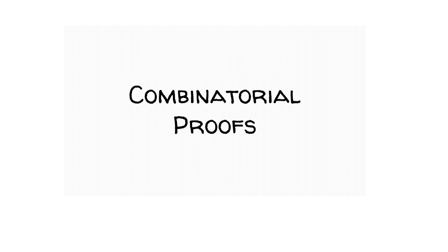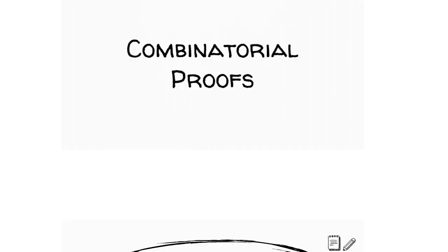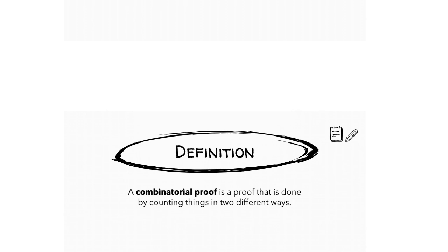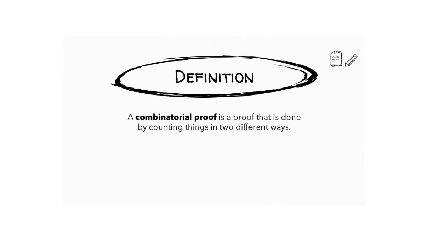In this video, we'll discuss combinatorial proofs. A combinatorial proof is a proof that is done by counting things in two different ways.